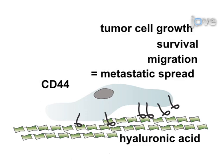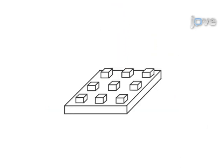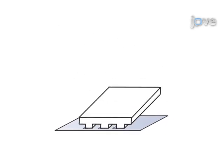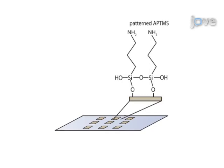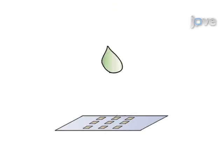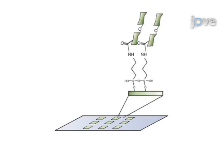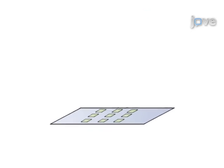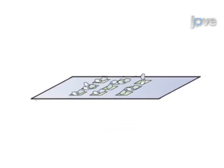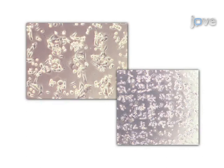To study cancer cell adhesion, migration, and growth on exogenous HA, standard photolithography is used to fabricate a micro-patterned elastomeric stamp, which is then used to create a patterned array of aminosilane molecules on glass substrates. Next, carbodiimide chemistry is performed to covalently attach HA to micro-patterned aminosilane, creating micro-patterns of HA. Cultured cancer cells can then be plated on the HA micro-patterns, and interactions can be visualized using light microscopy, scanning electron microscopy, or immunofluorescent microscopy.